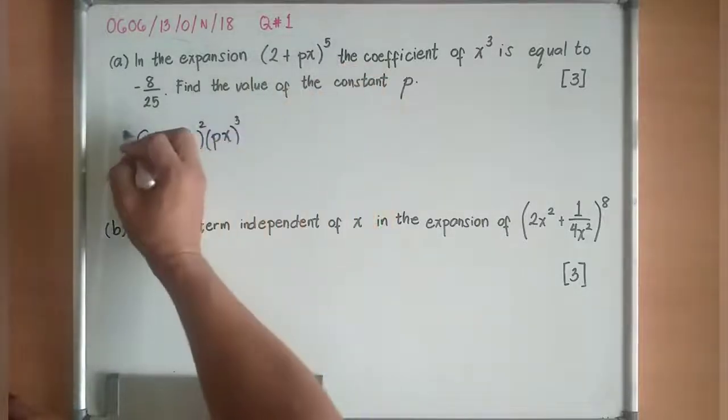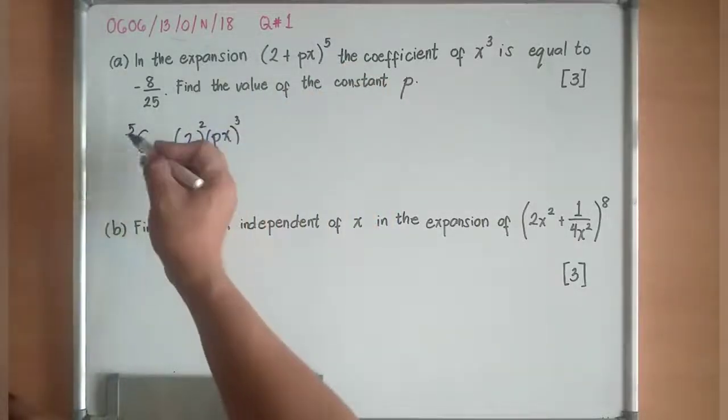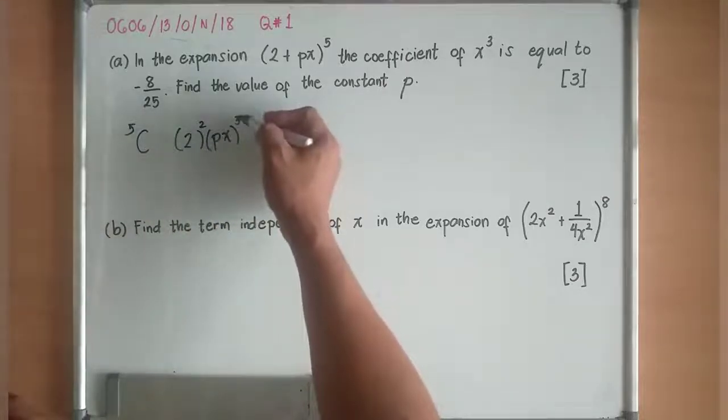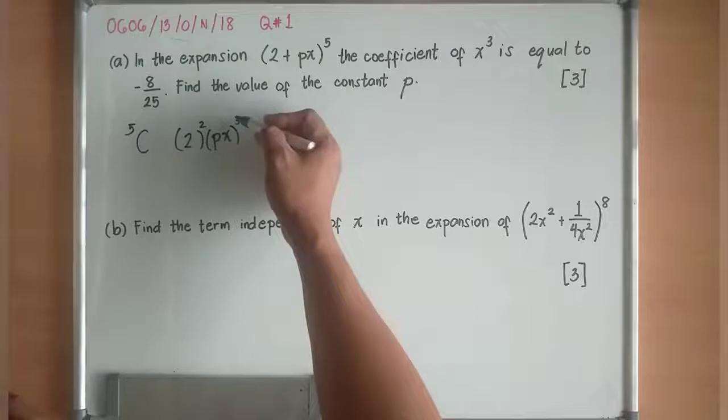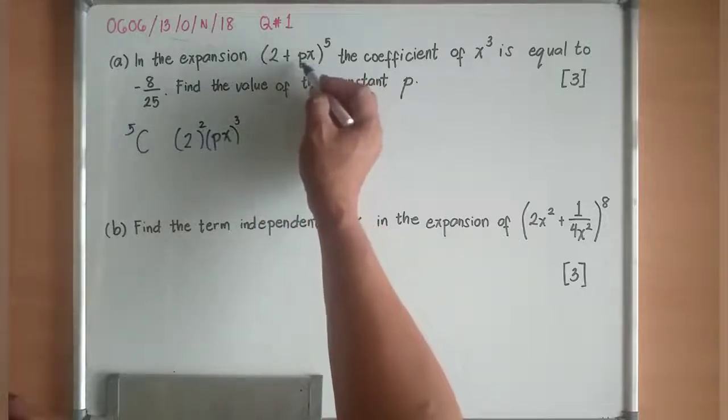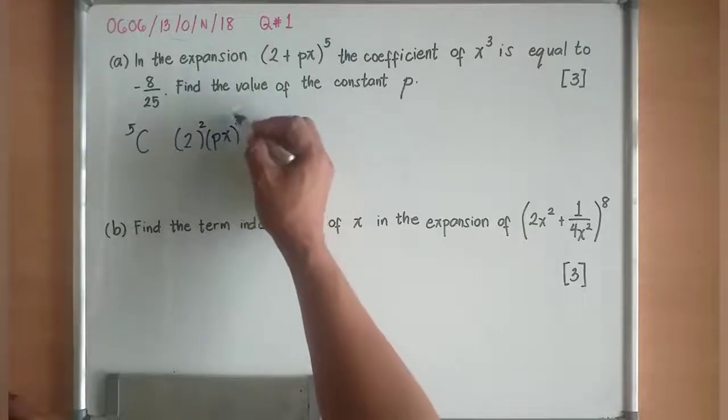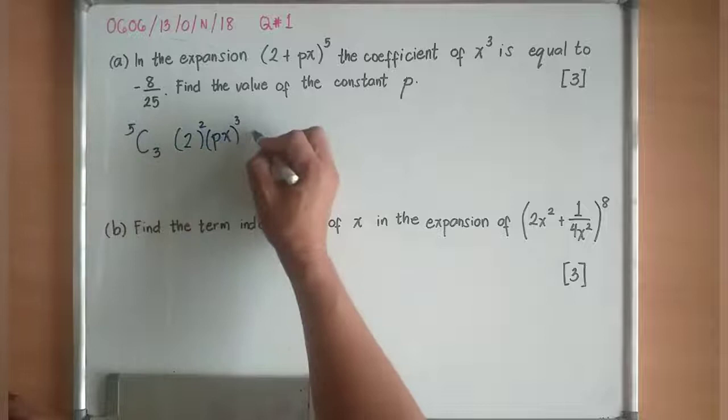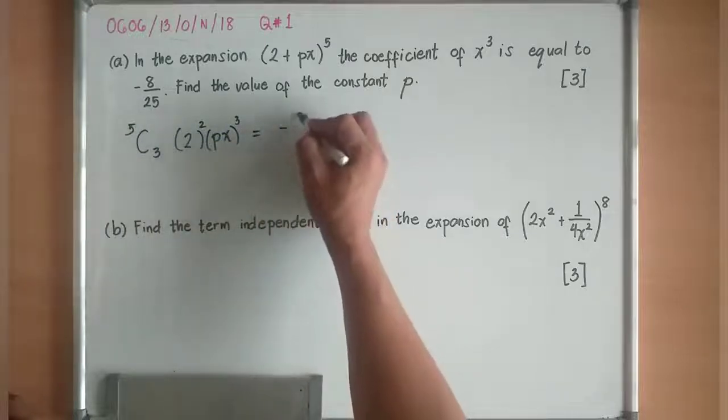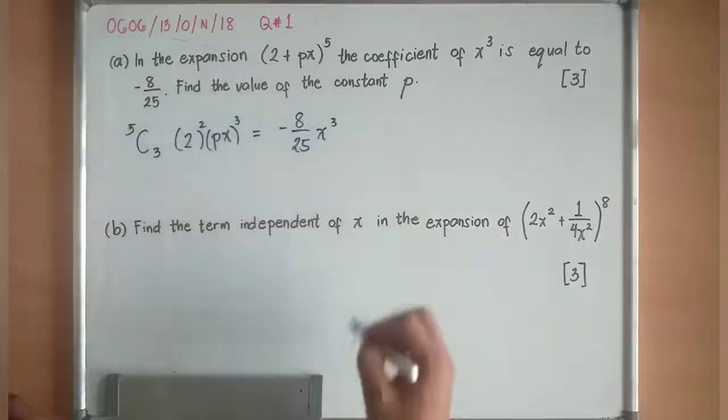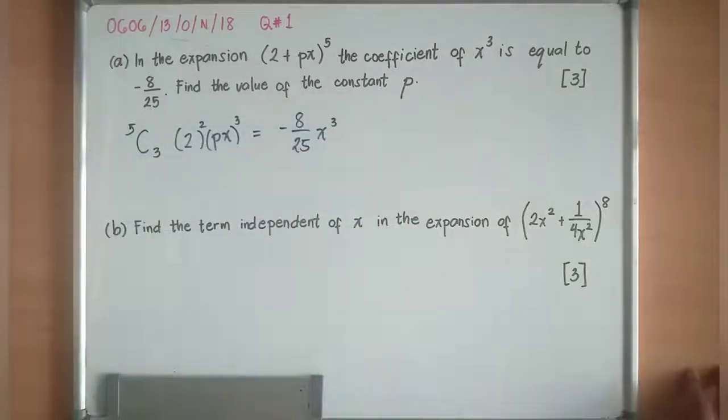Since this is 5, this is 5C, you follow the index of the second expression, which is Px, which is now cube. So 5C3 is equal now to -8/25 x^3, since -8/25 is the numerical coefficient of x^3.